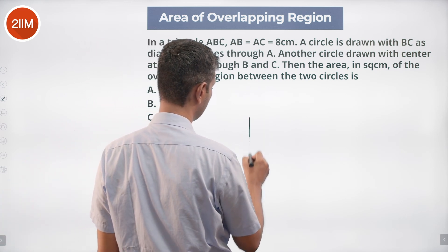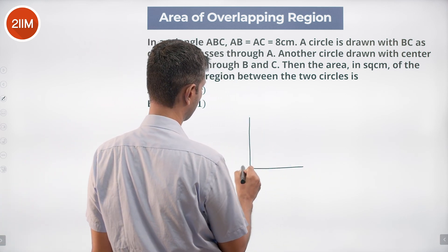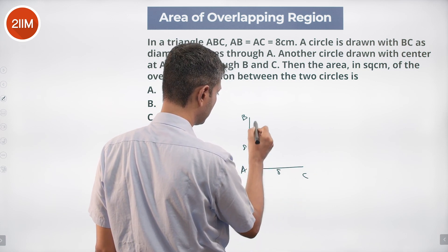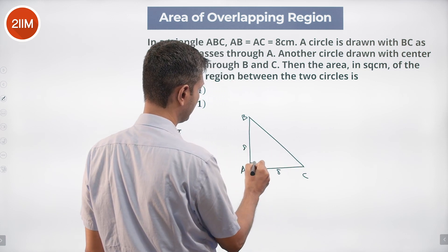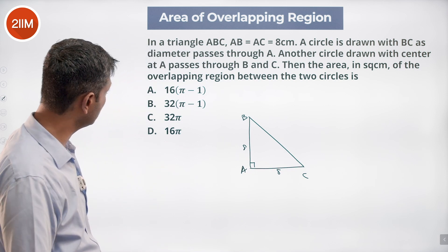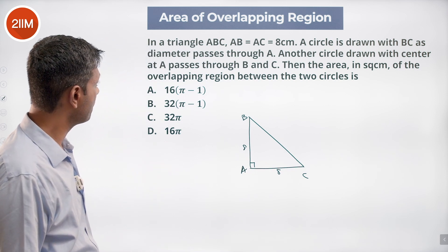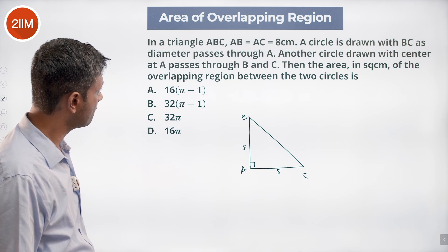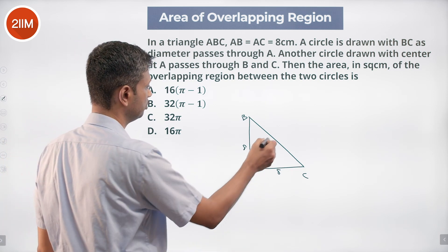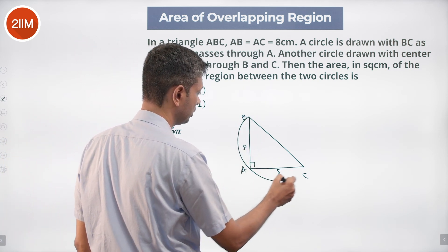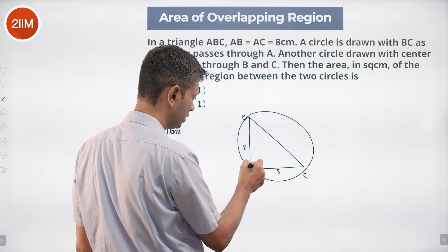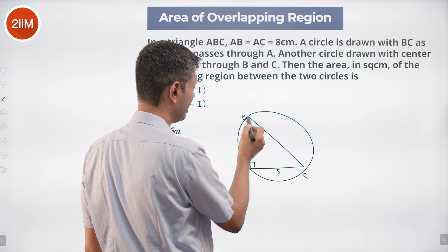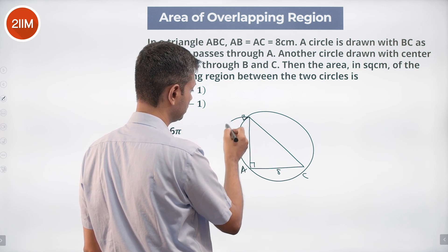Let's label the triangle ABC with AB and AC both equal to 8. The right angle is at A. Another circle is drawn with center A that passes through B and C — so BC is the diameter of the first circle, and this second circle has center A and radius 8, passing through B and C.